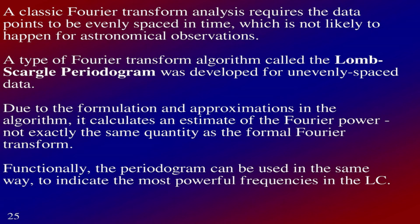A classic Fourier transform requires data points evenly spaced in time, but for astronomy observations that's just not going to happen — weather, daytime, and so on. So the type of algorithm called the Lomb-Scargle periodogram was developed for unevenly spaced data, and that's typically what astronomers use. Due to formulation approximations in the algorithm, it calculates an estimate of the Fourier power — not exactly the same quantity as a formal Fourier transform, but used in the same way to indicate the most powerful frequencies.